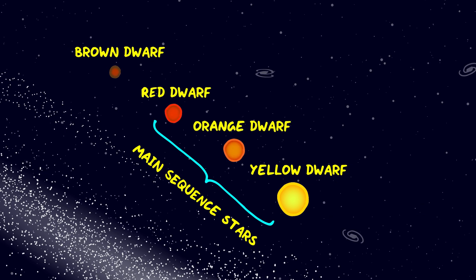Smaller than red dwarves are brown dwarves which aren't really stars because they were never massive enough to create fusion in their cores. They're about the same size as Jupiter but have at least 13 times the mass.